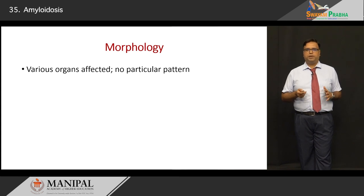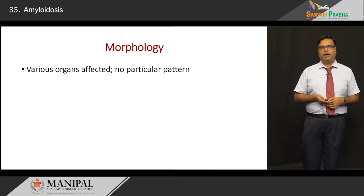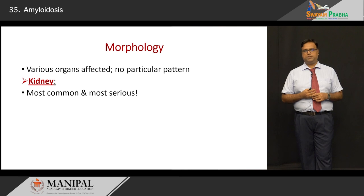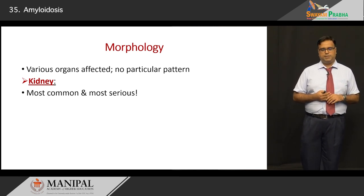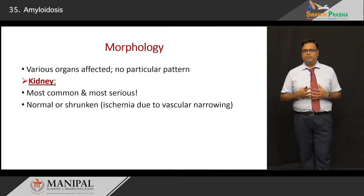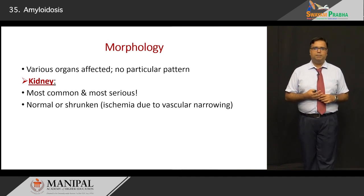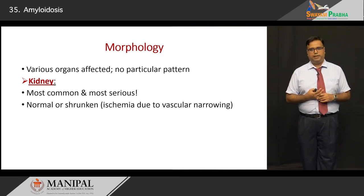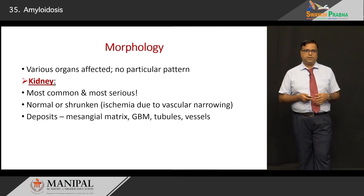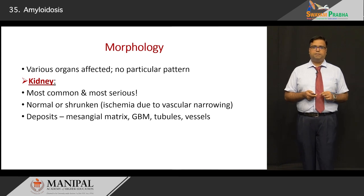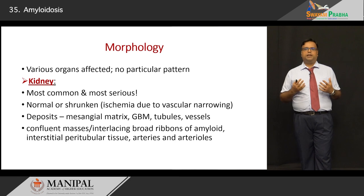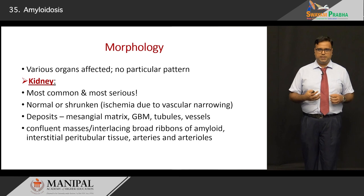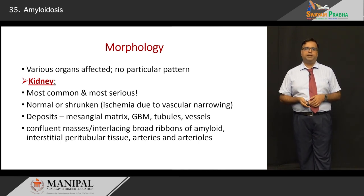Looking at morphology, all organs of the body are affected; there is no particular tropism, but some organs are more commonly involved. The kidney is the most common and most seriously affected: the kidney may appear normal or shrunken mainly due to ischemia, as amyloid deposits on vessel walls compromise lumina. Deposits occur in the mesangium — causing mesangial thickening — and within the glomerular basement membrane, peritubular areas, and perivascular spaces. On light microscopy, they appear as confluent broad pink ribbons under H&E in the interstitial and perivascular spaces.